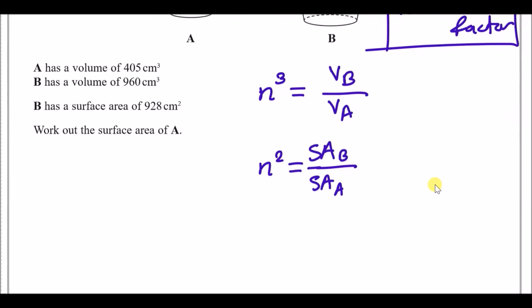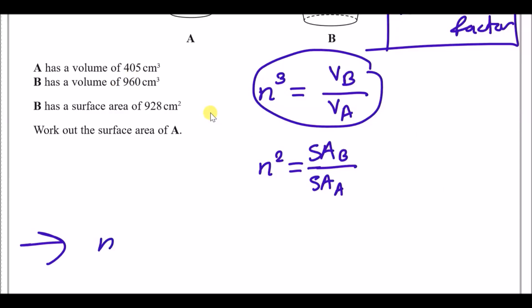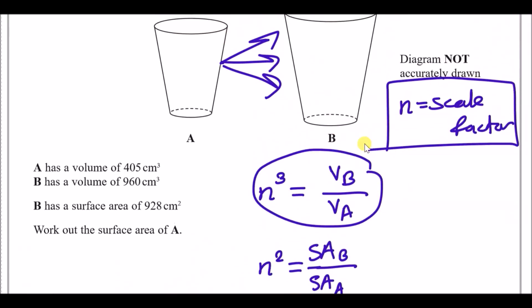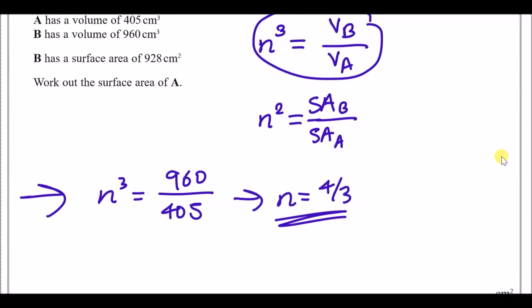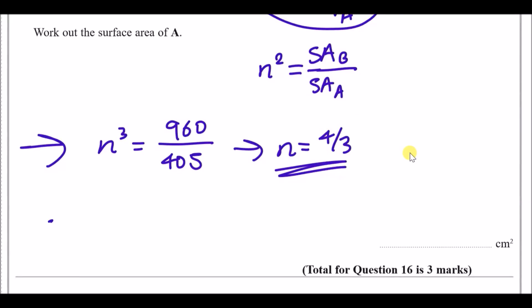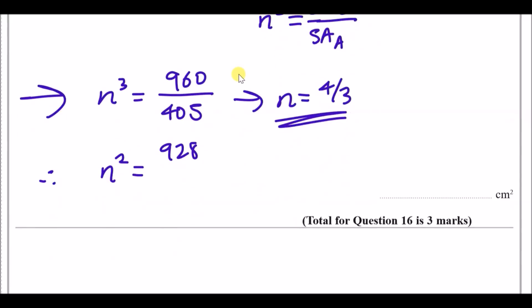n³ = 960 / 405. Cube-rooting this gives n = 4/3, so vase B is four-thirds larger than A volume-wise. Using the second equation: n² = surface area of B / surface area of A, so (4/3)² = 928 / surface area of A.